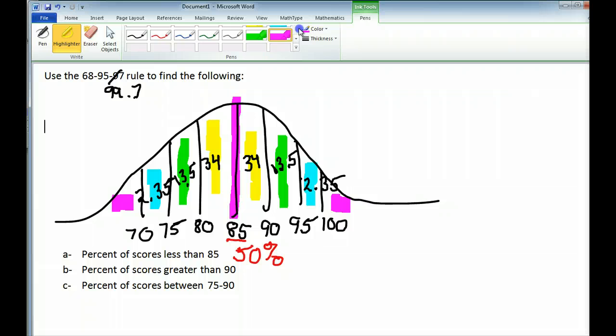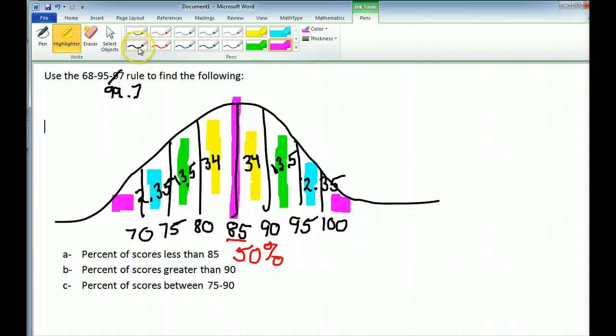Because you have to realize we've already considered 99.7% of the data, leaving us with just 0.3% or 0.15 on each side that fall very, very high or very, very low. That's going to help us with our next part.